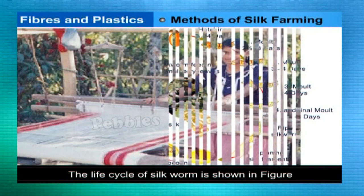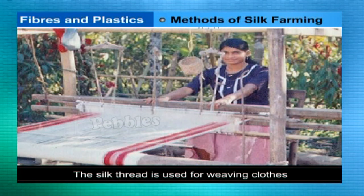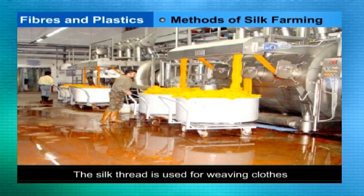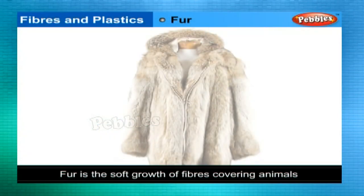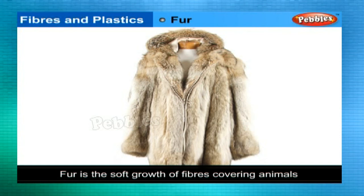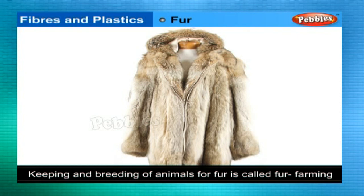If the cocoons are left unsteamed, the pupae develop into moths. When the moth comes out of the cocoon, the thread gets damaged. The silk thread is used for weaving clothes and can be dyed into various colors. The quality and type of silk depends on the processing method and the variety of silkworms.